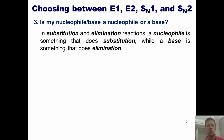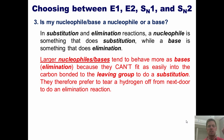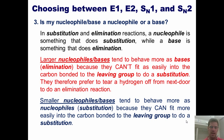Question three: is my nucleophile/base acting as a nucleophile or a base? Note that in questions one and two I haven't had to make this distinction yet — we don't do that until question three. In substitution and elimination reactions, a nucleophile is something that does substitution, while a base is something that does elimination. The letters SN in SN1 and SN2 stand for substitution and nucleophilic. So a nucleophile will prefer to do substitution, while a base will prefer to do elimination. The answer to how we distinguish them is: size.